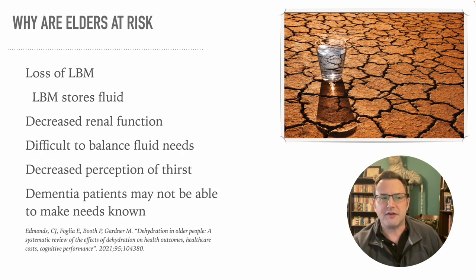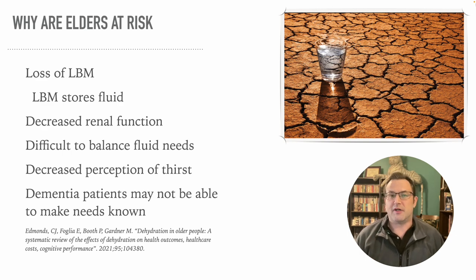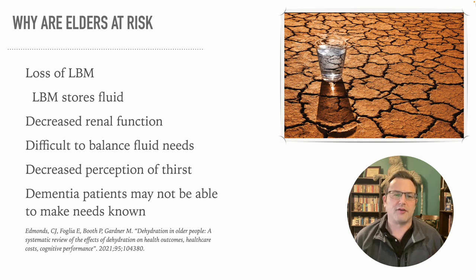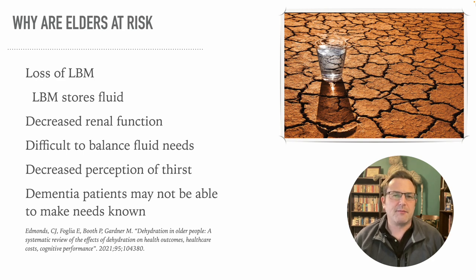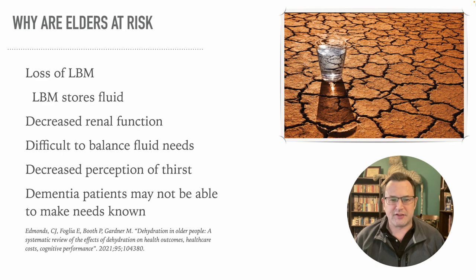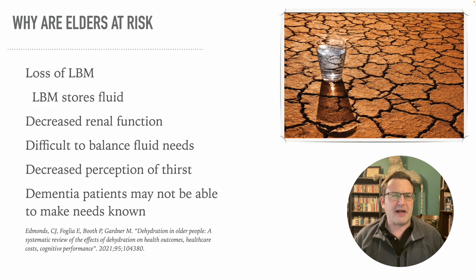Why are elders at risk for dehydration? Loss of lean body mass — lean body mass is like a metabolic sponge that holds water, so less lean body mass means less water storage. Decreased renal function makes it difficult to balance fluid needs, and elder patients may have more renal function impairment than we think due to artificially normal eGFR from decreased lean body mass. There's also a decreased perception of thirst in the elderly, and patients with dementia may not be able to make their needs known.